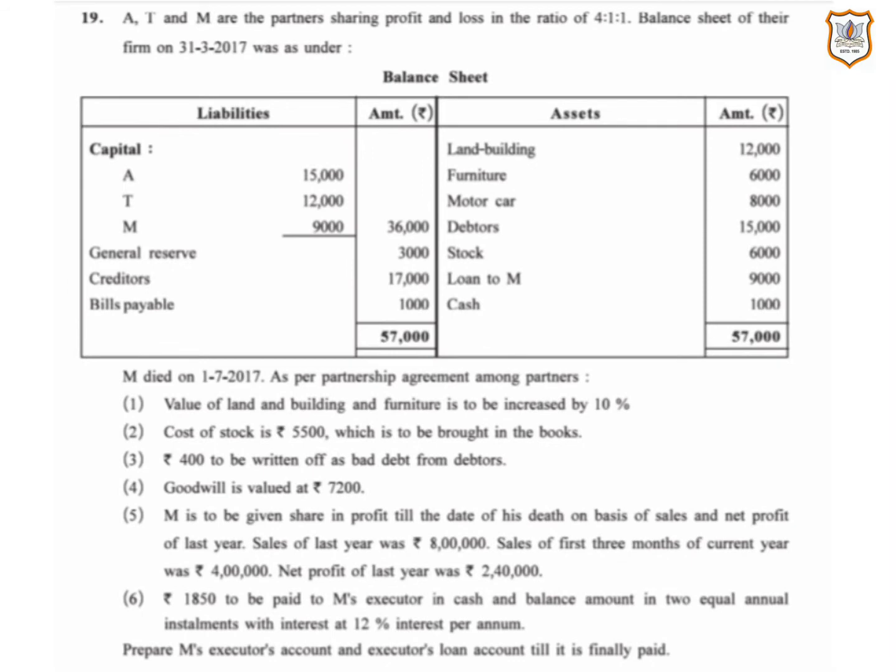Hello everyone, welcome back. Today we are going to do question number 90 of your textbook given on page number 274. AT and M are the partners sharing profit and loss in the ratio of 4 is to 1 is to 1.